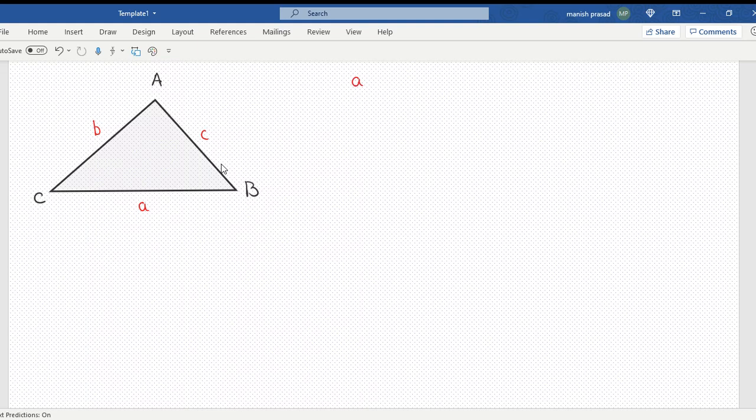What was the sine rule? A upon sine A equals B upon sine B, so sine B equals C over sine C.